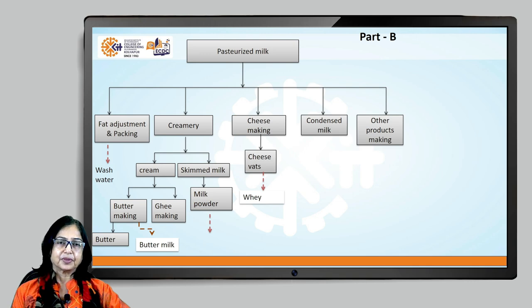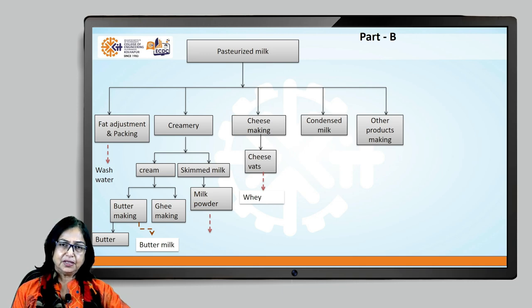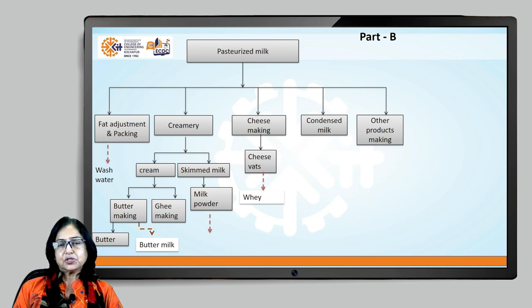Some of the cream separated in the creamery is used for ghee making, and there is no liquid waste in this process, though some solids may be generated. For skimmed milk and milk powder production, everything is evaporated and you get solids — no liquid waste.